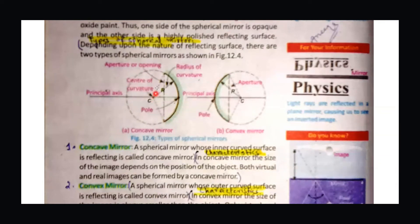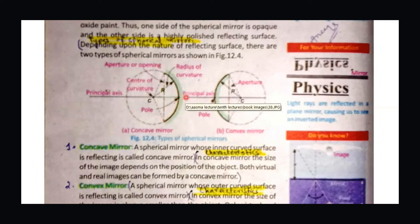To recap: the spherical mirror is a part of a sphere. If the side bulging is outward, then it is convex. If the inner surface is the reflecting surface, then it is concave. We have studied two terms: pole — the midpoint of the mirror — and C, center of curvature — the central point of the sphere.